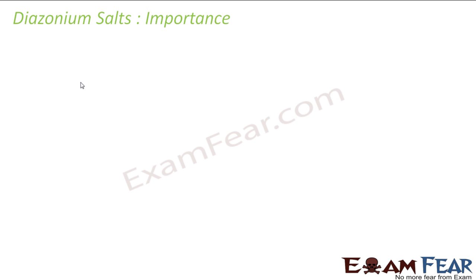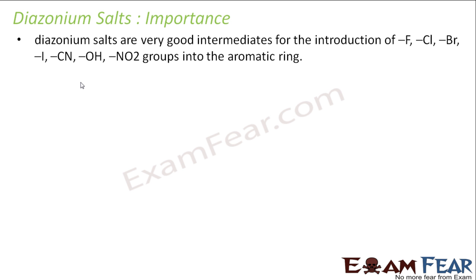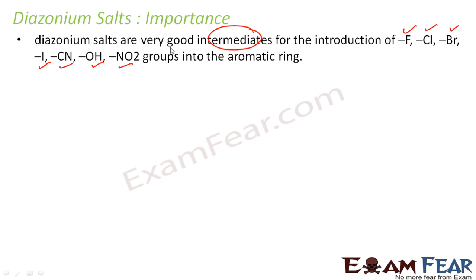Let's talk about the importance of diazonium salts. As we have seen, they are used as good intermediates for the introduction of fluorine, chlorine, bromine, iodine, cyanide, OH, and NO2 groups. Sometimes it is difficult to introduce these atoms or groups directly to aromatic rings, but these diazonium salts help us to achieve that target.